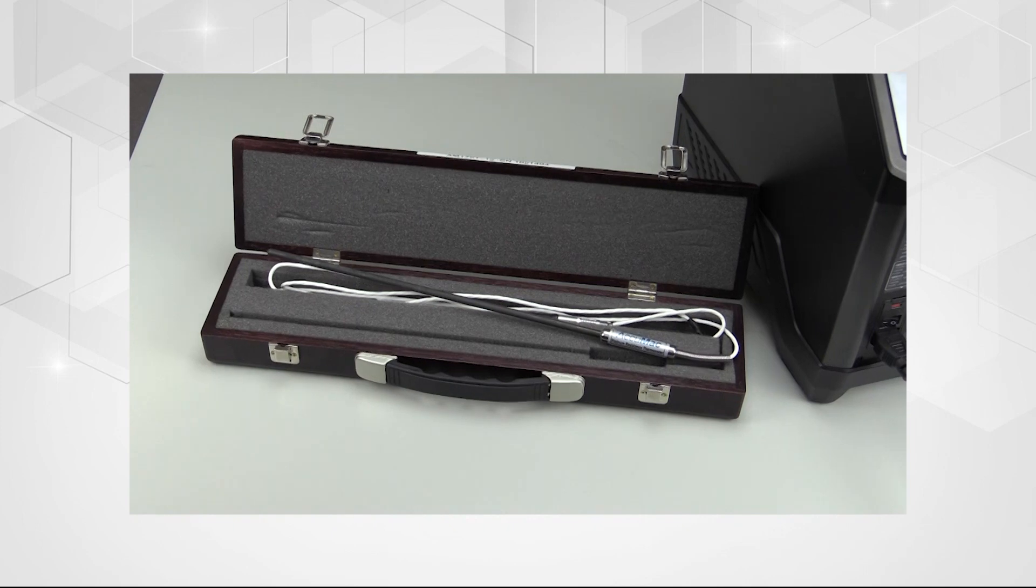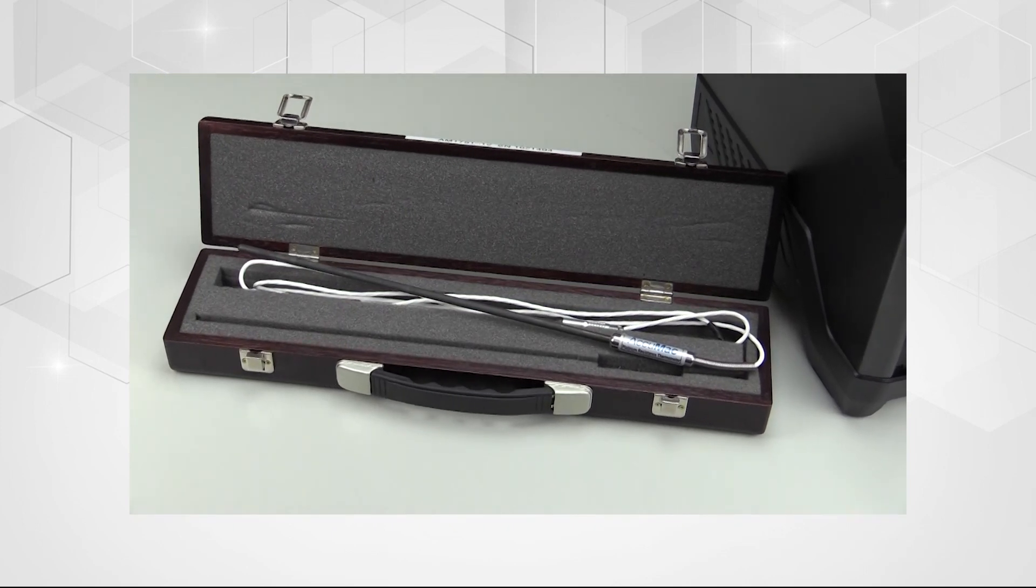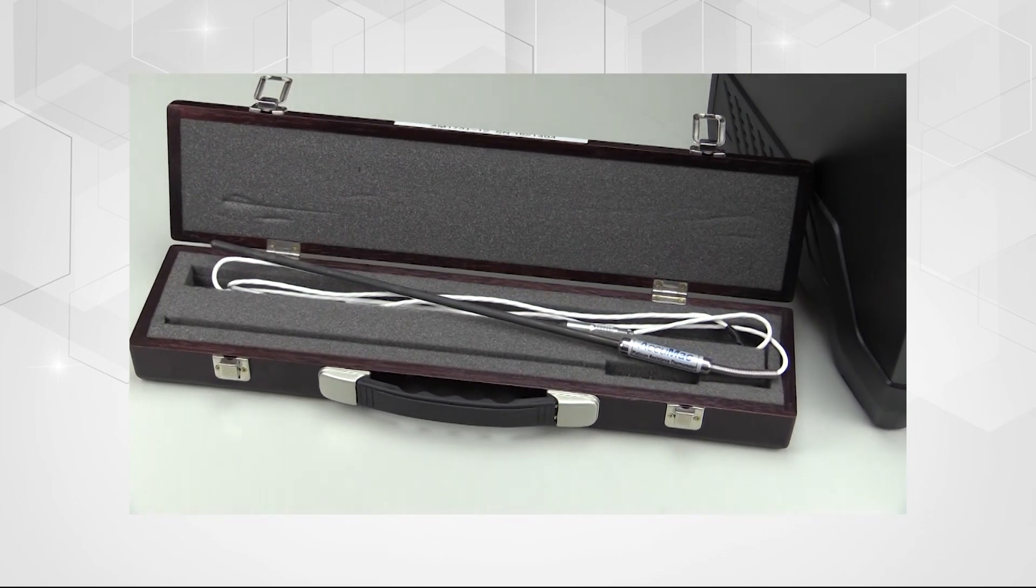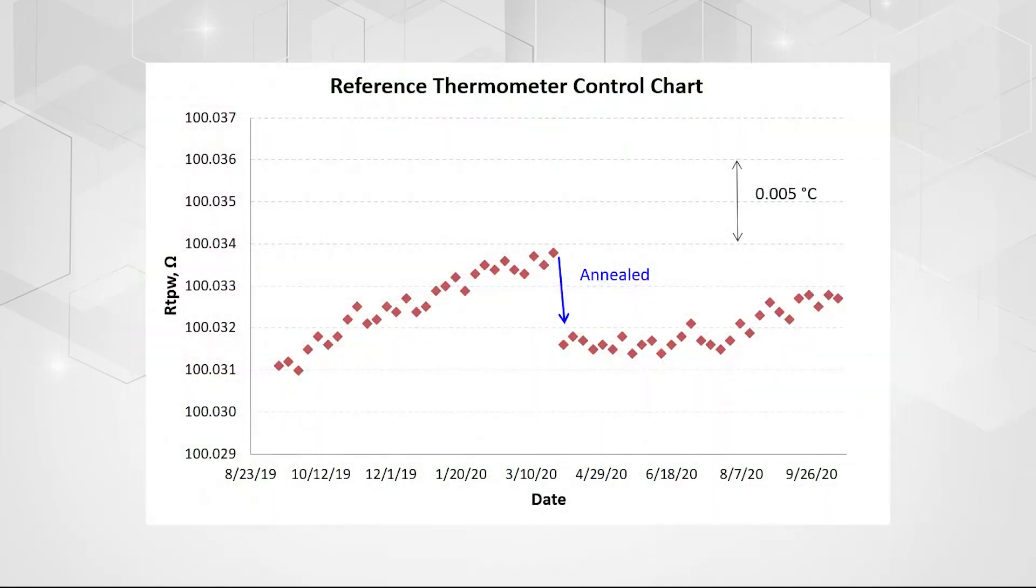During normal use and over time, platinum resistance thermometer probes build small amounts of stress and oxidation in the platinum wire. These subtle changes have an impact on the resistance values of the probe, which in turn impacts the measurements they take. By consistently measuring and logging the resistance of the probe with a TPW device, good control can be achieved.